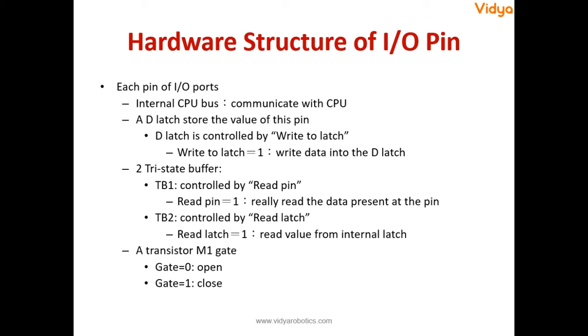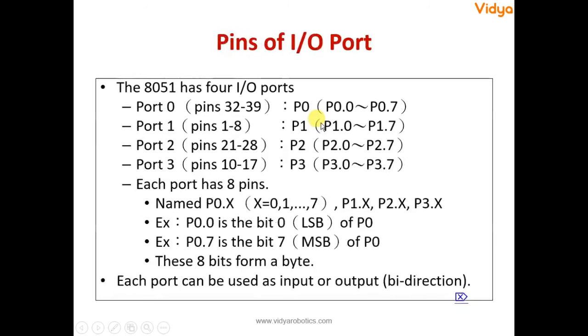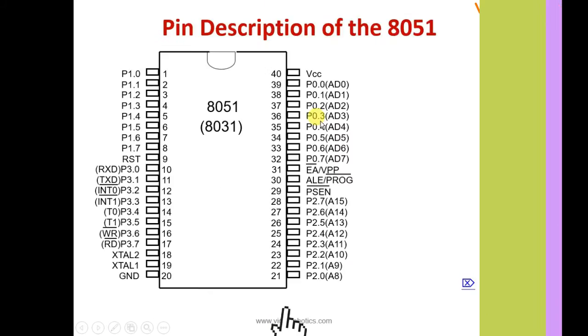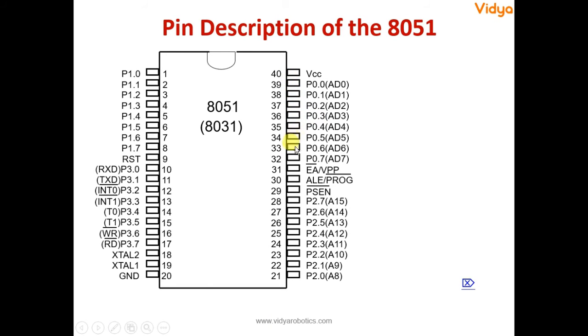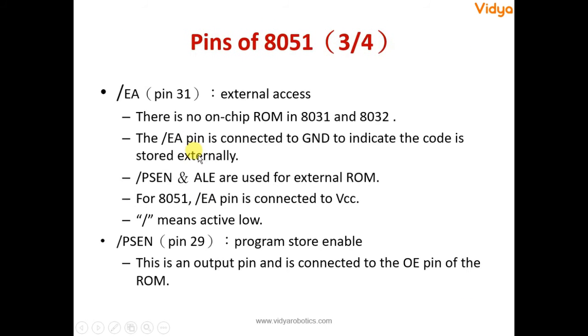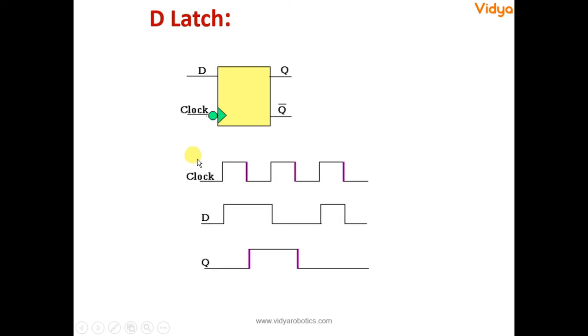Hardware structure of this IO pin is very interesting to understand. Because when we write down logic 1 onto a particular pin, plus 5 volt or VCC appears onto that pin. And whenever we write down logic 0 onto a particular pin, 0 volt or ground potential appears onto that particular pin. And how it happens? There is a D latch associated with every single pin of the port. So you can see if this is the pin out, then there is a D latch with every port pin. So there are total 32 D latches present inside the 8051 with port. How do they work? Let us see.